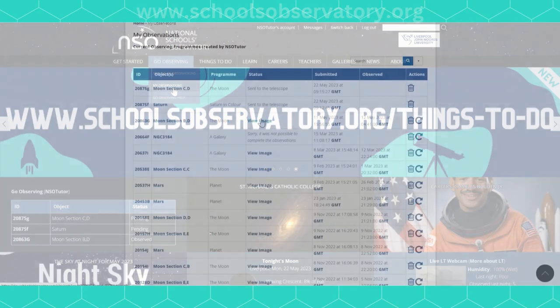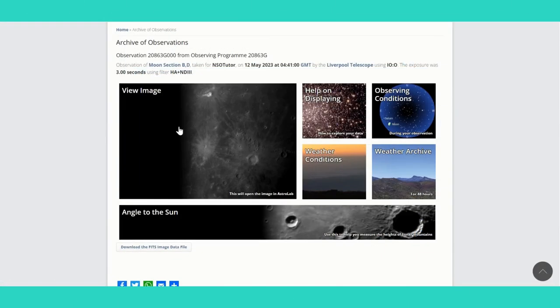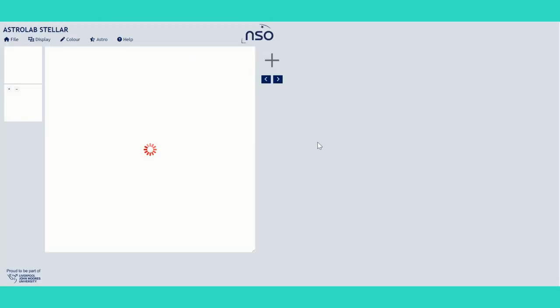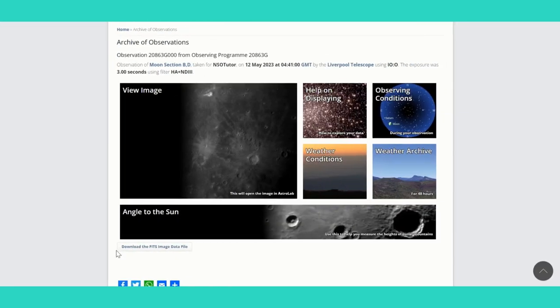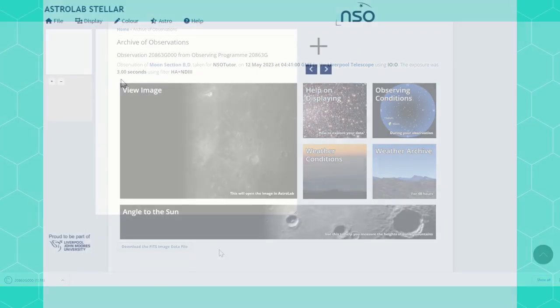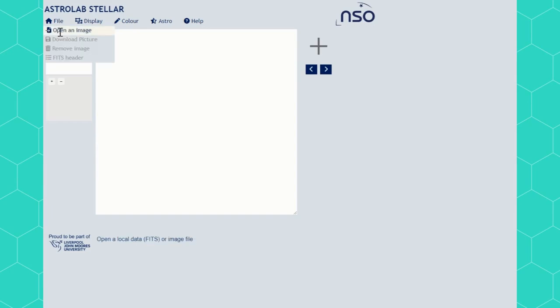You can directly open your image into Astrolab Stellar from the my observations section of the website or you can download files to open them anytime. For downloaded files use the open an image option in the file menu.